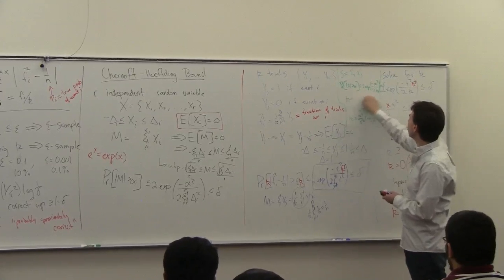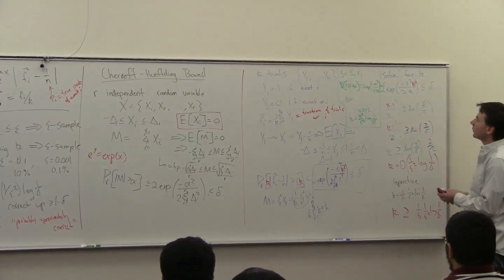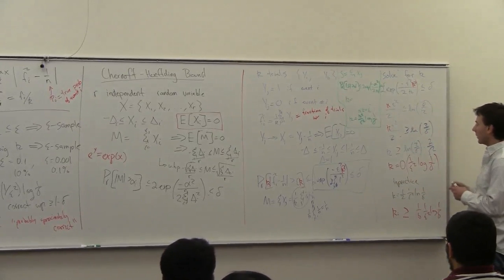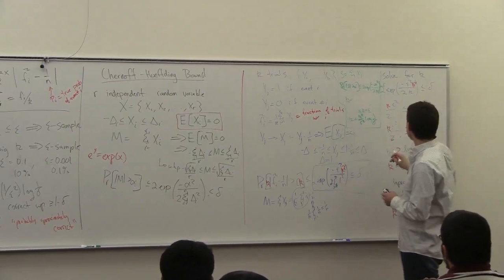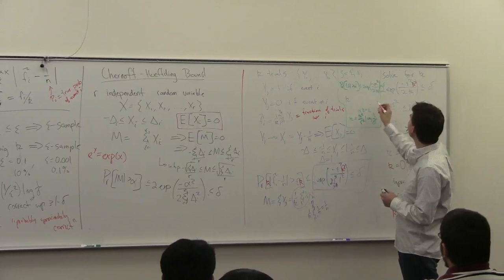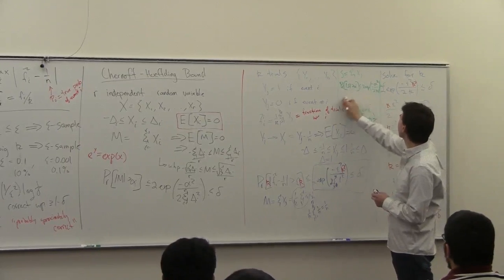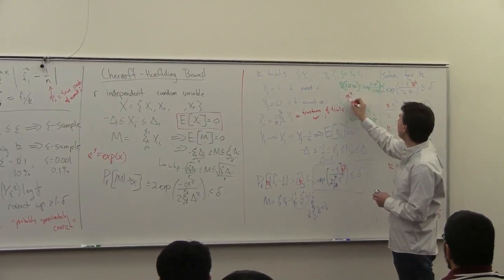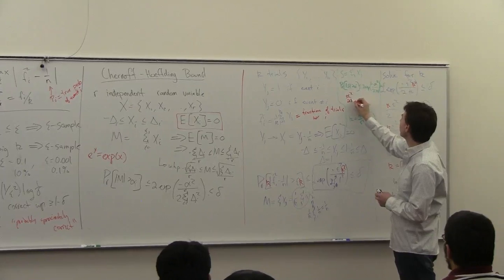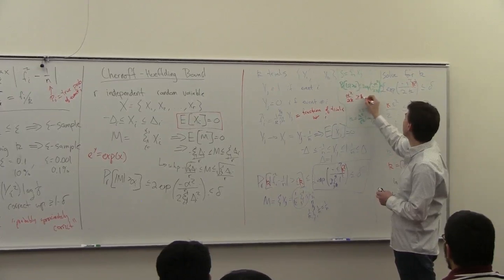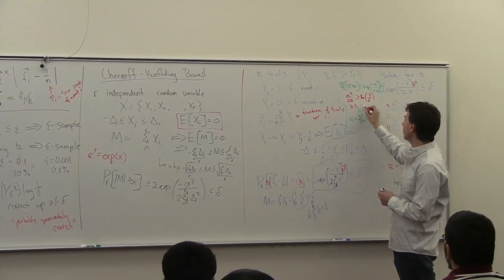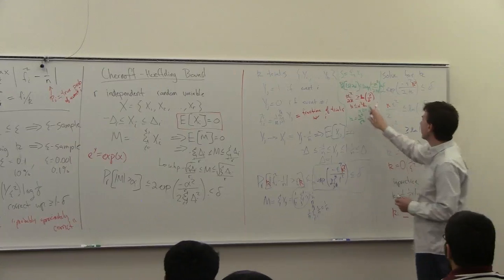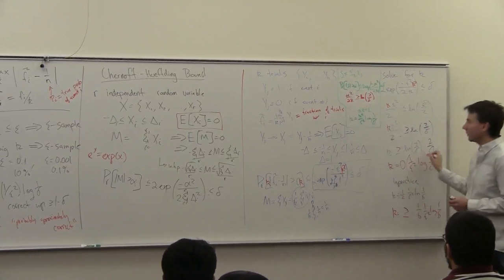When I solve this correctly, what I'm going to get — let's go through a couple steps — I have alpha squared over 2, k is going to be greater or equal to natural log of 2 over delta. And I'm going to get k greater than something, which is not going to work out. So I'm not going to be able to get a bound like this.